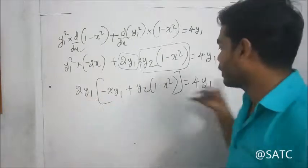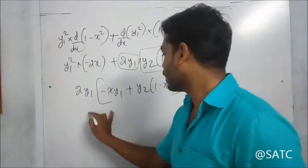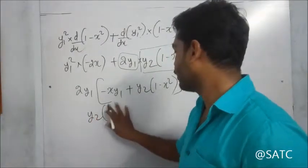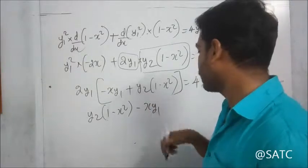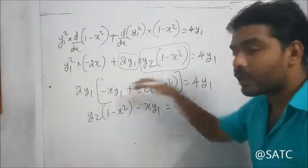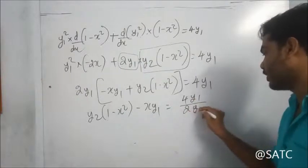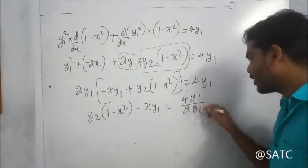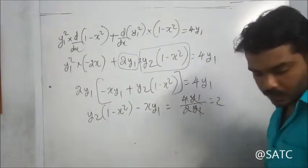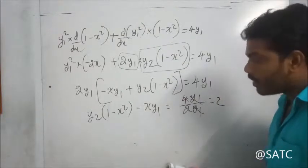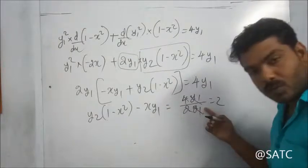Dividing both sides by 2y1, the y1 terms cancel. We get (1 minus x square) into y2 minus x times y1 equals 2. Hence the second equation is proved.